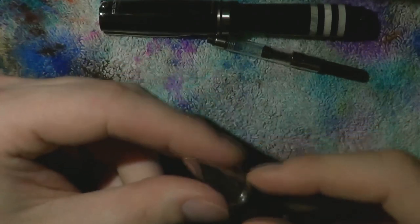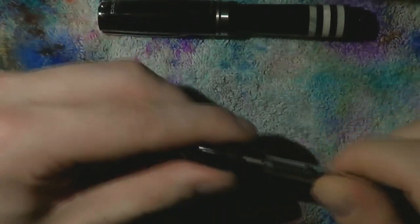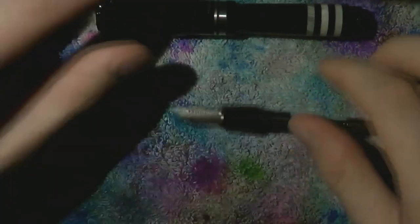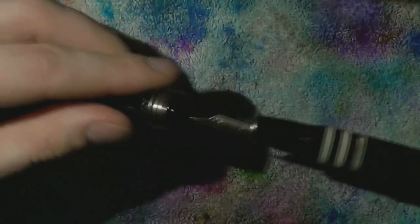The nib and feed are in there. When they are all the way in, take the converter, screw it back in. Take the barrel, screw it back in. Screw the cap on. Sit back and enjoy yourself.